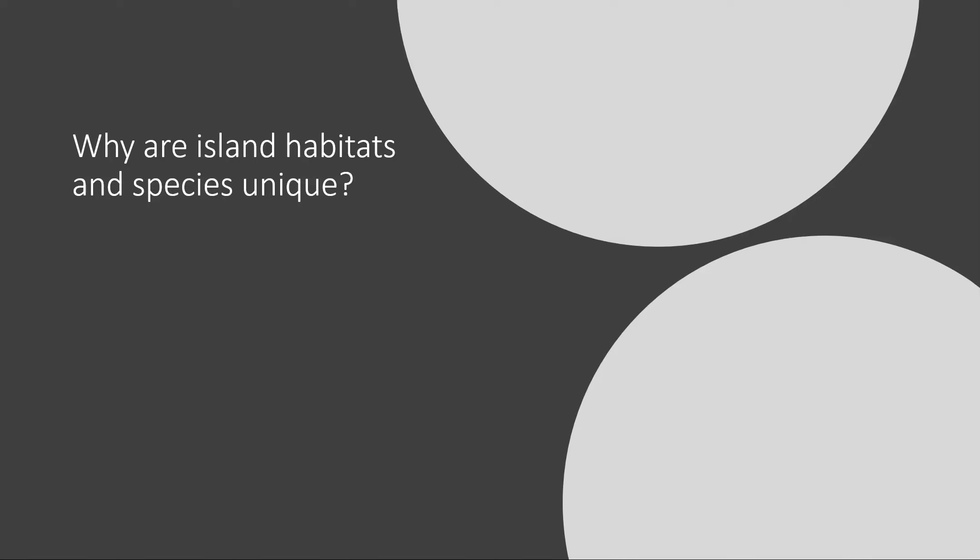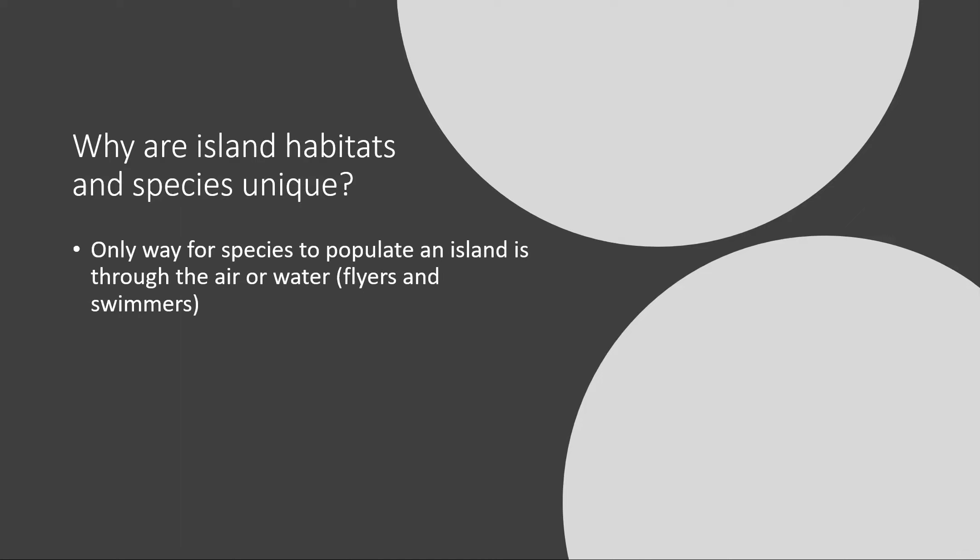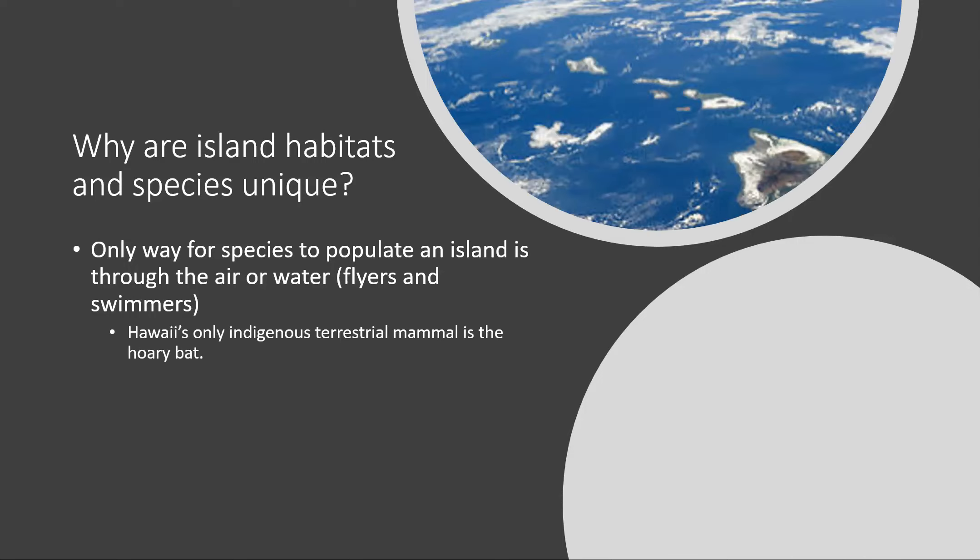So why exactly are island habitats and species unique? Well, for one, the only way for species to populate an island is through the air or by water — so flyers and swimmers. Terrestrial animals that are land-based don't have an easy way to get to an island unless they're particularly good swimmers or flyers. Hawaii, for example, is a very isolated set of volcanic islands out in the Pacific Ocean.